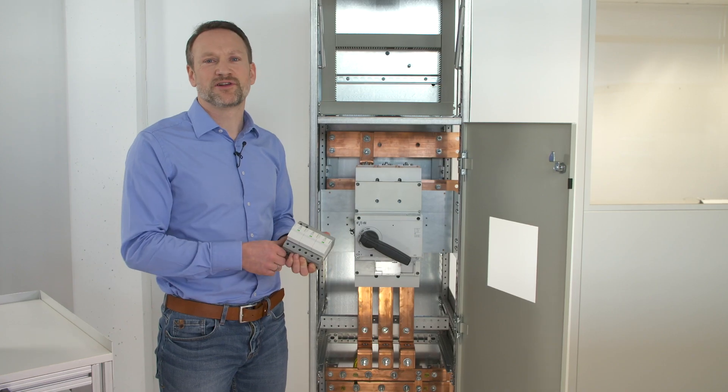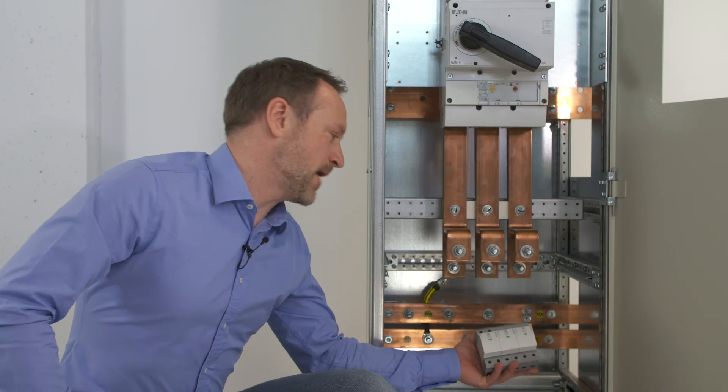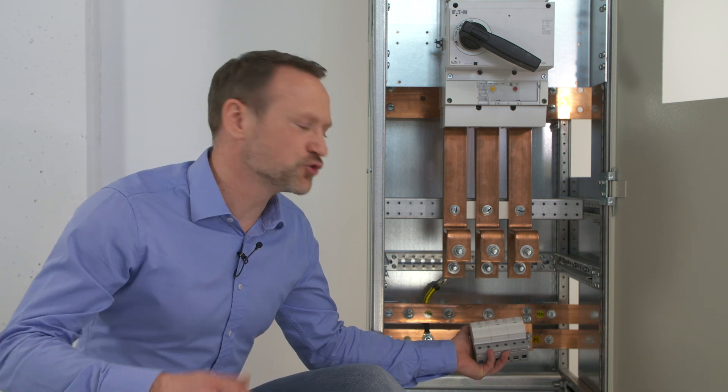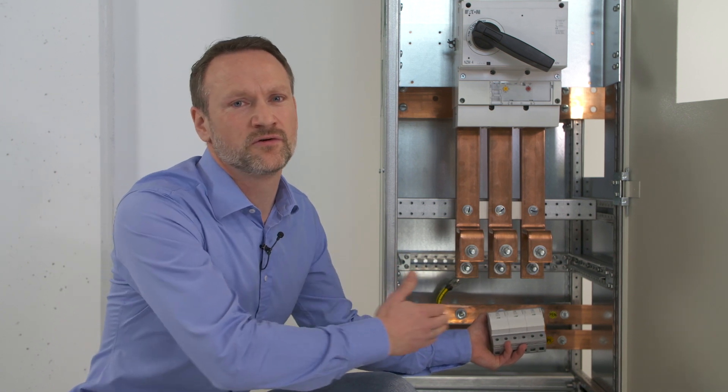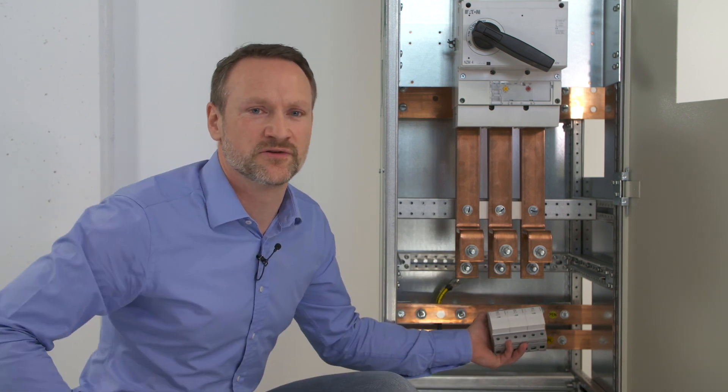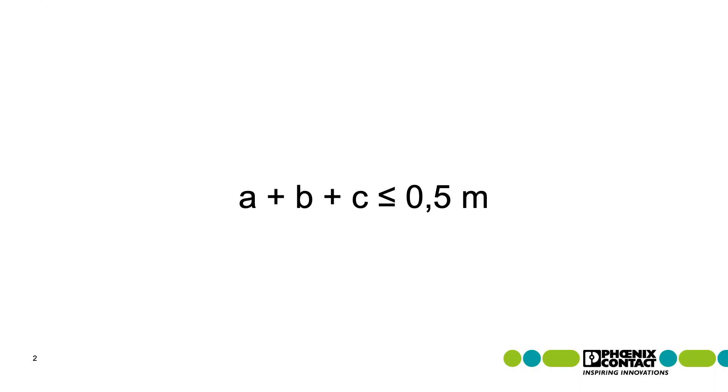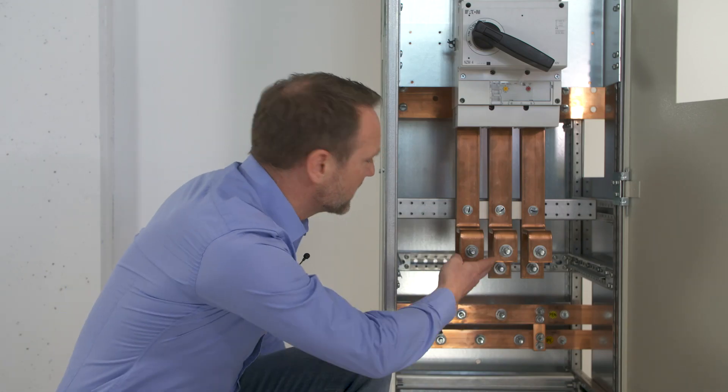But how can we solve this cable length problem? If we installed the protective device in the lower area of the control cabinet, the cables would be much shorter already. However, taking the cables to the backup fuse, the protective device and the connections into account, it would still be too long as the standard requires a connection length shorter than 50 cm. Not to mention the fact that we do not have the space to house the backup fuse here correctly.